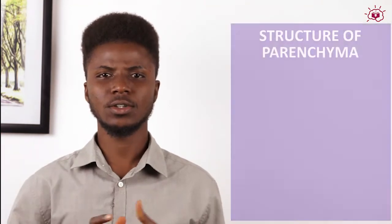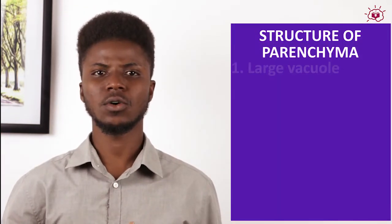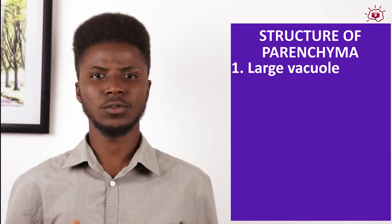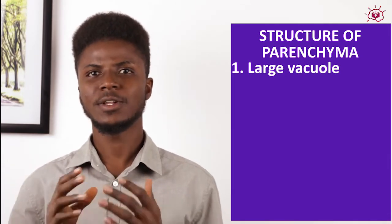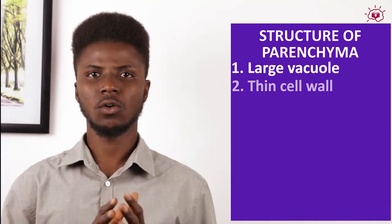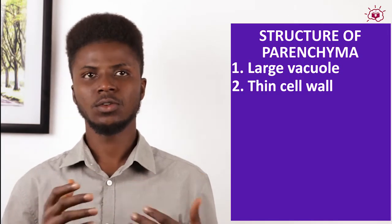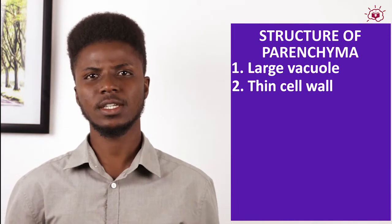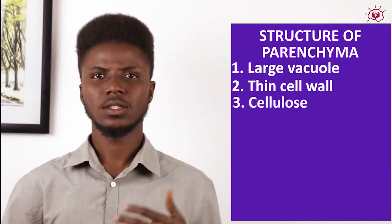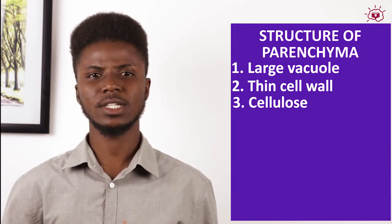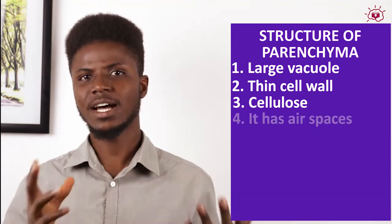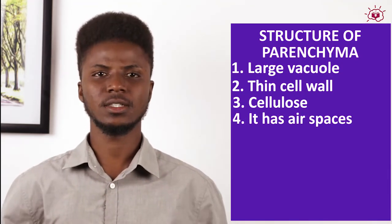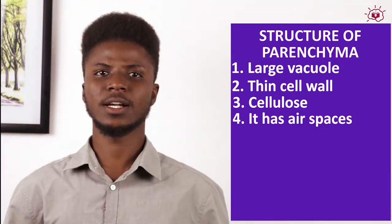What is the structure of parenchyma? It consists of cells with large vacuoles and a relatively thin cell wall, which contains cellulose. The parenchyma also has air spaces within it. Note that parenchyma is the most common supporting tissue in plants.